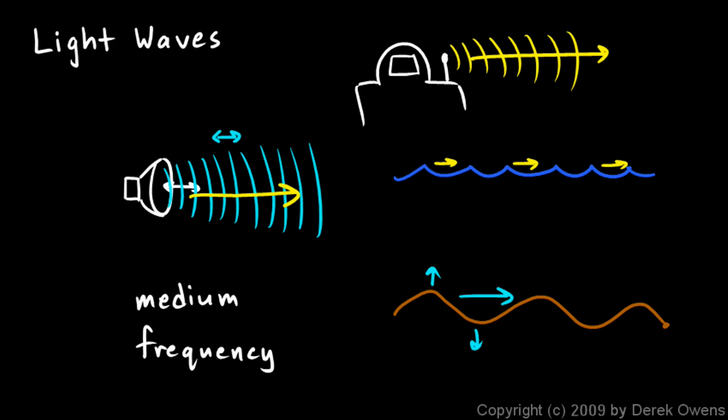Just as all these different types of waves that we've talked about are disturbances of some medium, a light wave is also a disturbance, and a light wave is a disturbance in an electromagnetic field. And I'll tell you what I mean by that.